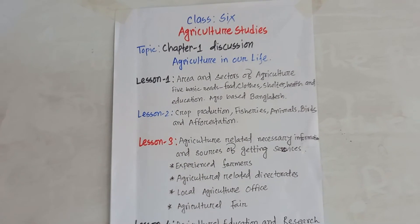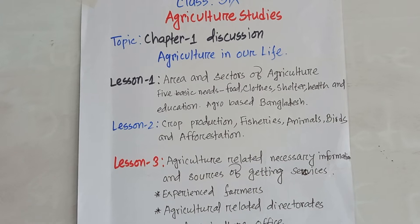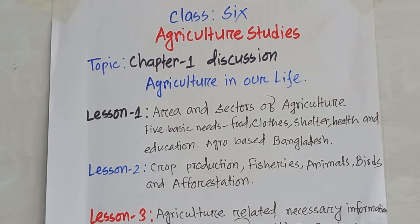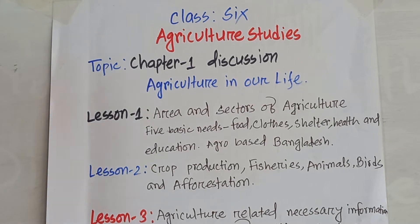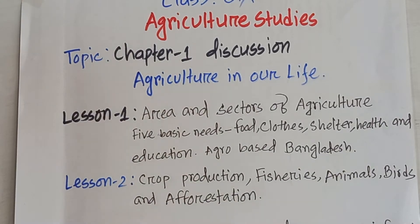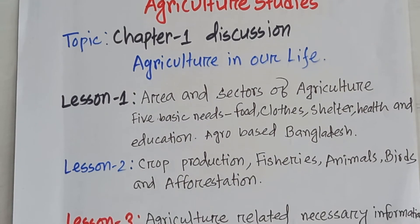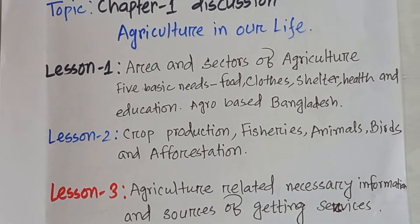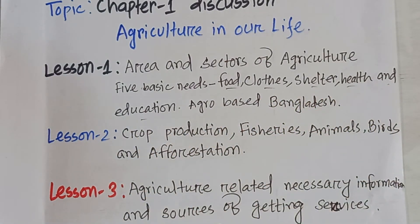Dear students, this chapter's title is 'Agriculture in Our Life.' By this title, what we can understand is how many necessities does agriculture carry in our daily life. In lesson 1, we will get the areas and sectors of agriculture. In the elaborate notion of this lesson, we will get 5 basic needs, and the needs are food, clothes, shelter, health, and education. These are our basic needs.